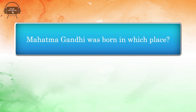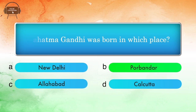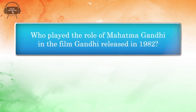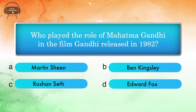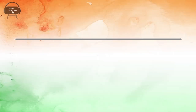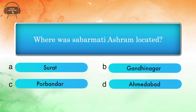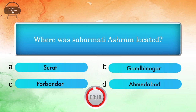Mahatma Gandhi was born in which place? Options: New Delhi, Porbandar, Allahabad, Calcutta. Answer: Porbandar. Where was Sabarmati Ashram located? Options: Surat, Gandhinagar, Porbandar, Ahmedabad. Answer: Ahmedabad.